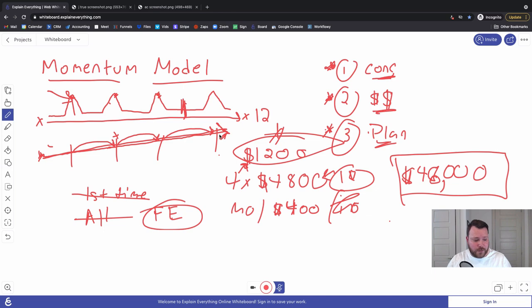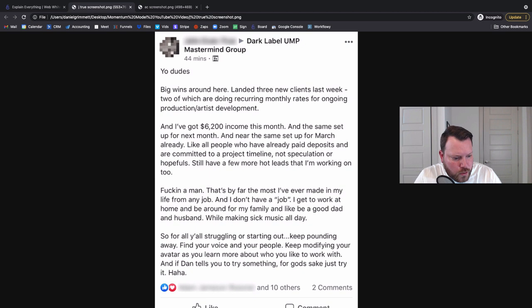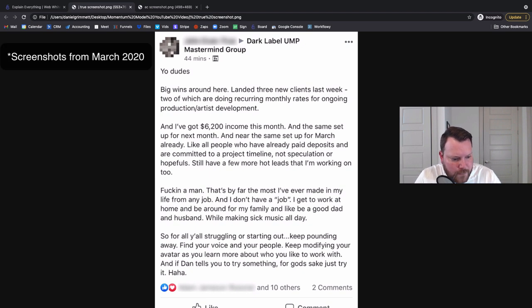Here's a couple of examples of this in real life, just so you know it's a real thing. So this is John True, one of our alumni. And he said big wins around here: landed three clients last week doing recurring monthly rates for ongoing production artist development. So I've got $6,200 income this month, same set for next month, and near the same set for March. So John, like I said, probably 30, 40% of his business is this.